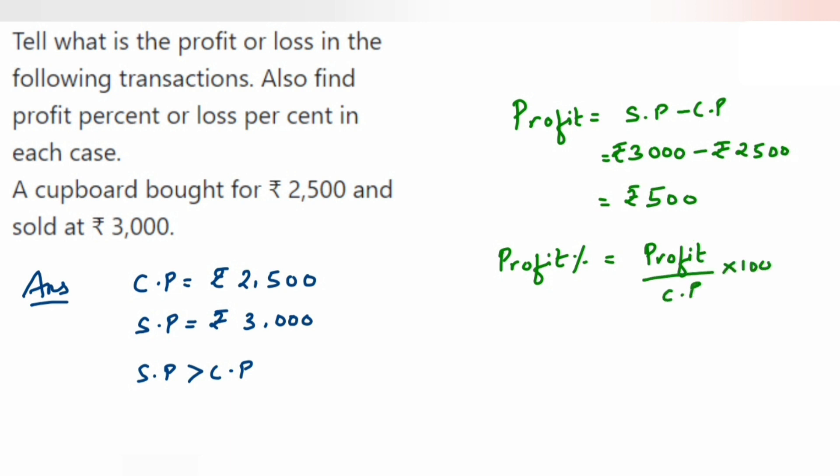Profit is 500 upon CP is 2,500 multiplied by 100. You can cancel the zeros. Now we're left with 5 by 25. You can cancel directly or you can use the multiplication table to cancel.